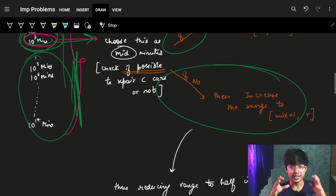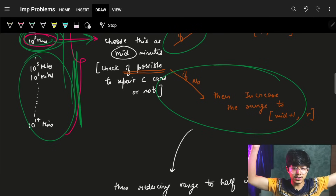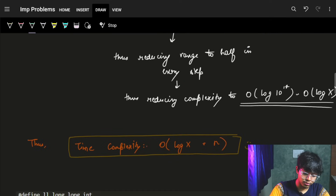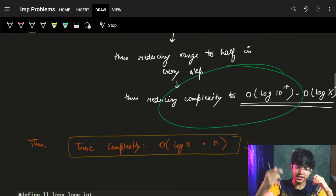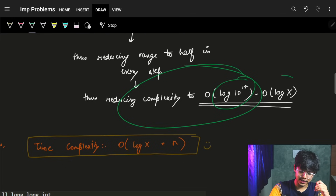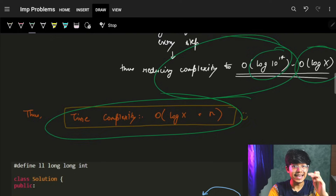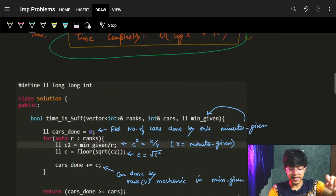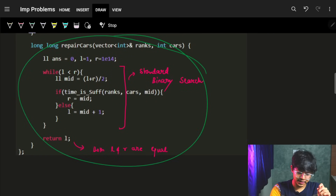If the mid time is possible, we reduce our range to the left half; if not, we move to mid+1 up to the right end. At every step we reduce the range by half, so the search takes log(X) steps. The total complexity reduces from O(N × X) to O(N × log X).